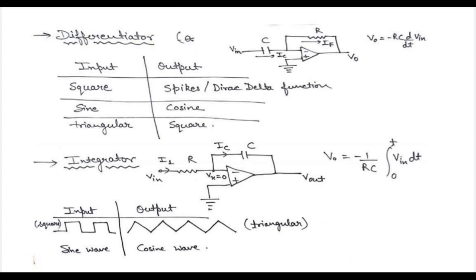Just interchange the positions of resistance and capacitor and you get the integrator circuit. Also, the non-inverting terminal — the positive terminal — is grounded in both circuits. This is another important thing to observe. Now let's look at the output expressions for differentiator and integrator.